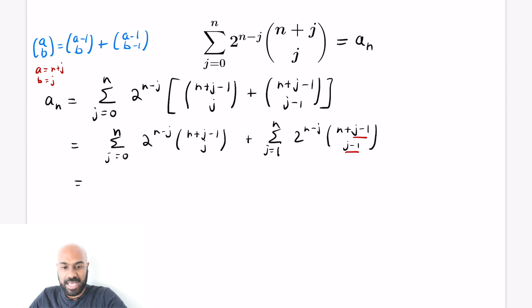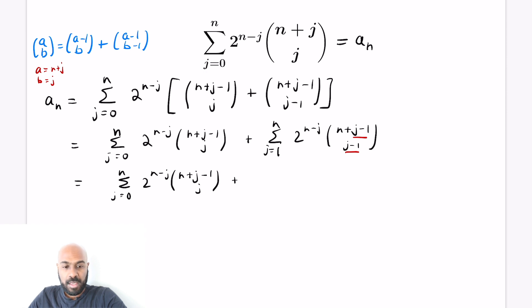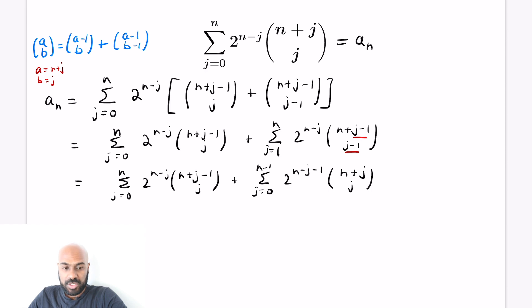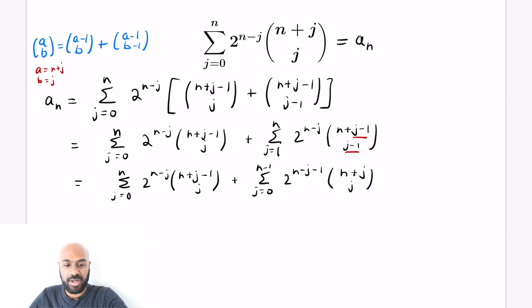On the right-hand side, we have something similar to before but with a lower index, which is going to help us. After re-indexing, the second sum becomes the sum j equals 0 to n minus 1 of 2 to the n minus j minus 1 times n plus j choose j. This second sum actually looks very much like our beginning term a sub n — it's just slightly off because we have n minus 1 involved instead of n.